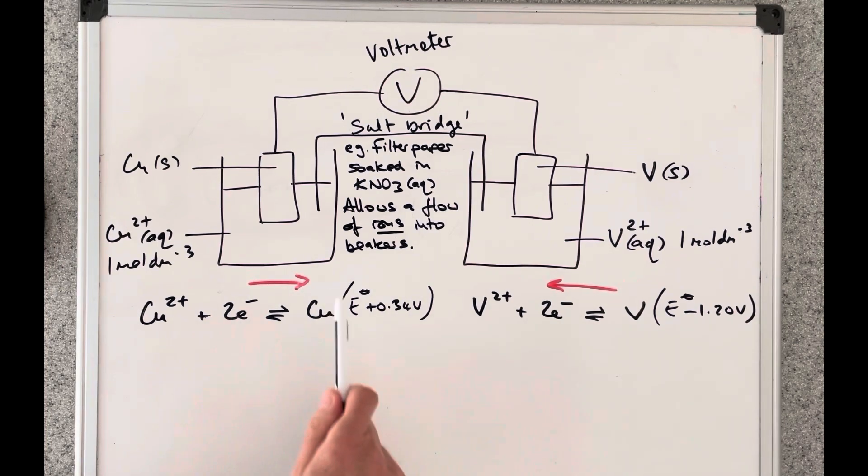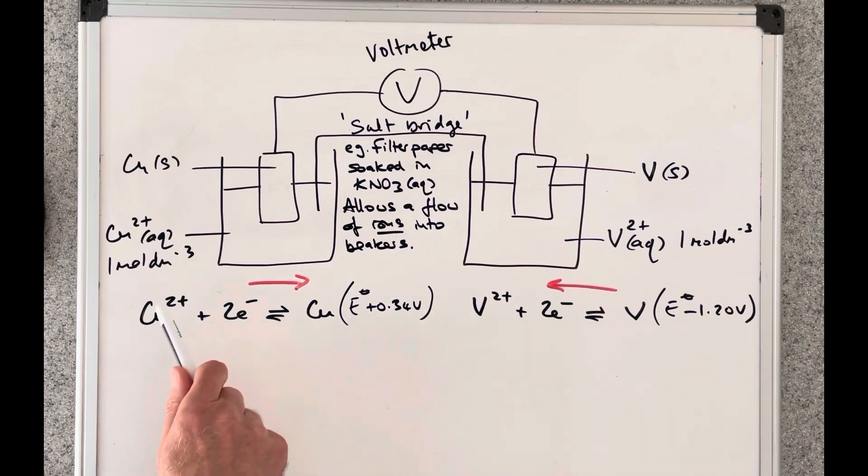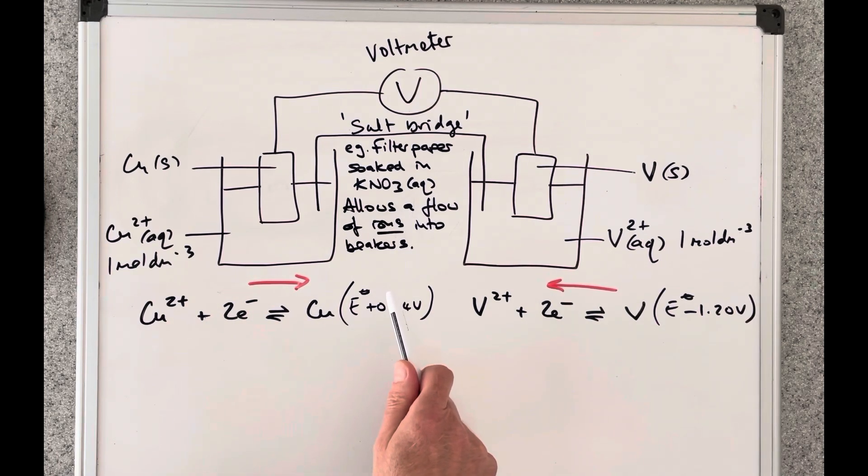So essentially this half equation is going to run in the forwards direction gaining electrons whereas this one has been forced to give up its electrons so it's going to run in reverse.